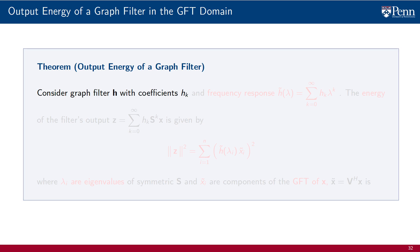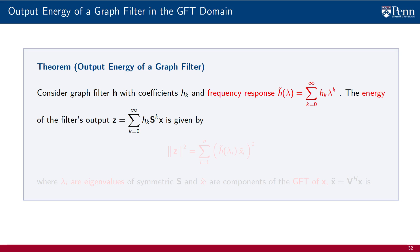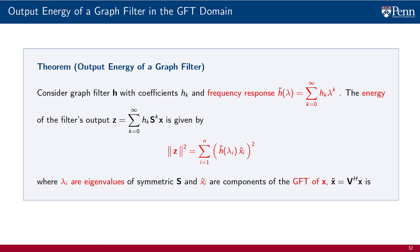In this theorem, we consider a single graph filter h with coefficients h_k and frequency response h̃(λ). This is a polynomial with coefficients h_k on a scalar variable. We are interested in the output Z of this graph filter, which is the same polynomial but on variable S. We want to evaluate its energy — the norm of the signal squared. The theorem claims it equals the sum of squares of the product between the filter's frequency response evaluated at the eigenvalues of the shift operator and the respective GFT components of the input signal x. The sum is over all GFT components i, which corresponds to all eigenvalues, since there is a bijective correspondence between eigenvalues of S and GFT components.